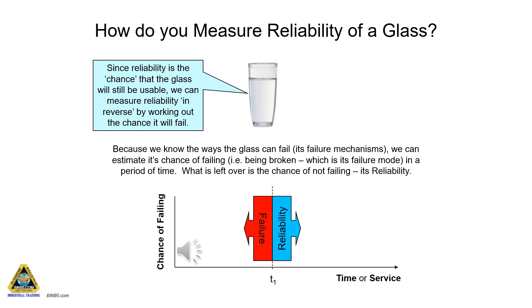Some glasses survive for centuries, others less than a week. The glass is not such a good example to equate to equipment component reliability because all glasses, regardless of design, are about equally vulnerable, so the only things helping them to survive is how they are treated in the intensity of use — in other words, operator precision. Most other things can be designed to be more inherently reliable. The glass example, though not a true reflection of what happens in operating equipment, will still help us to envisage the concepts of reliability — a chance event and not degradation under load conditions.